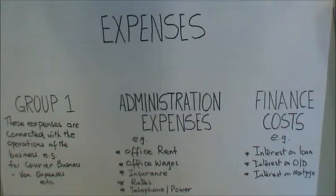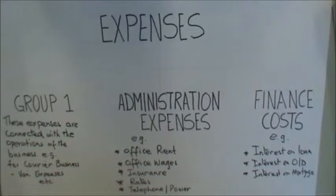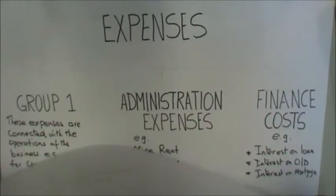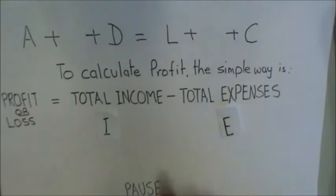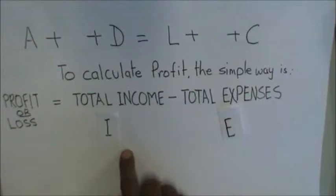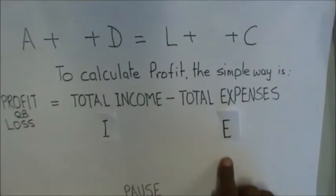To summarize what we've done: income is reported in two groups — revenue and other income. Expenses are reported in three categories — Group 1, administration expenses, and finance costs.